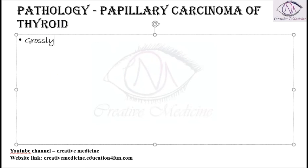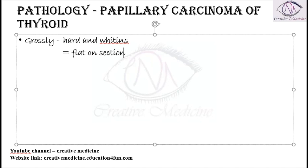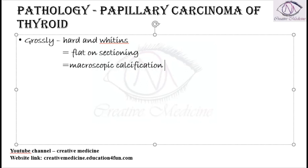Grossly, the papillary carcinoma of the thyroid is a hard and whitish structure, and it is seen flat on sectioning. On sectioning you can see the flat structure, and also you will see presence of microscopic calcification in the mass, with necrosis and cystic changes seen pathologically.